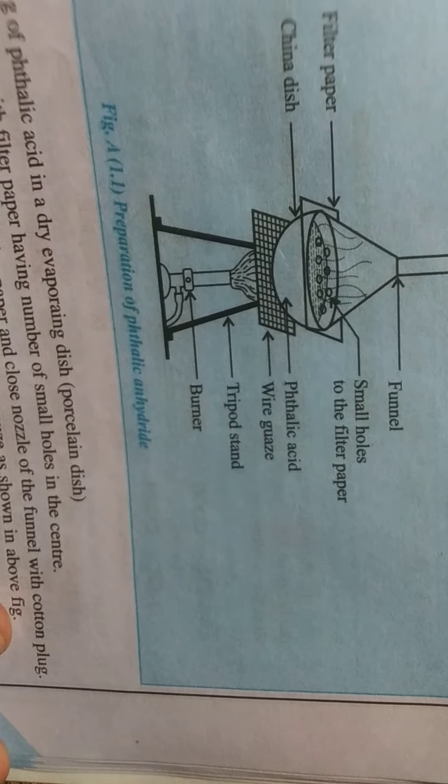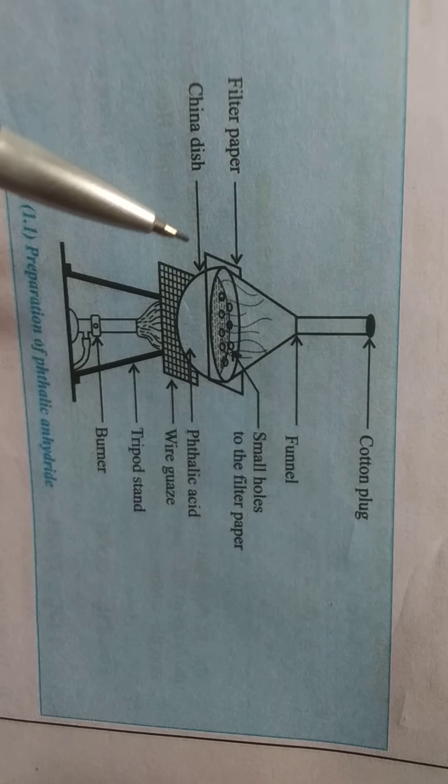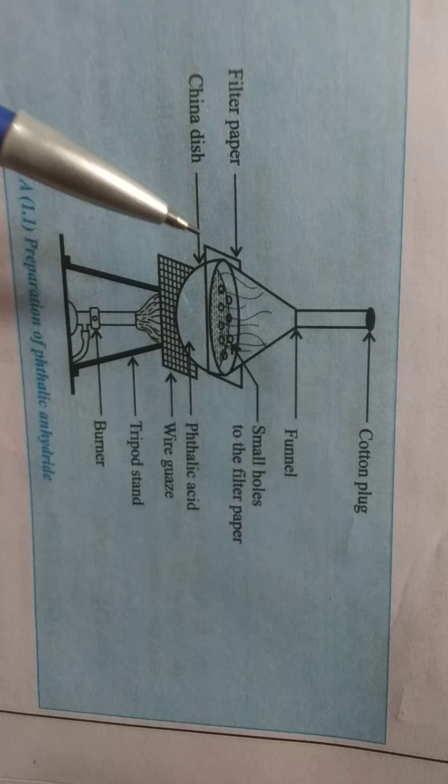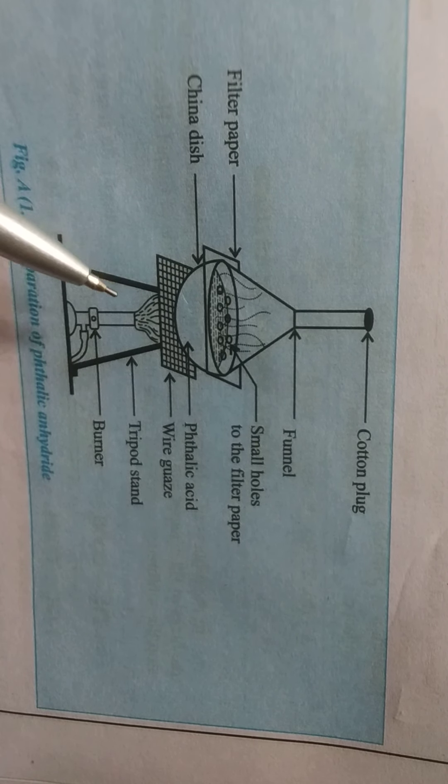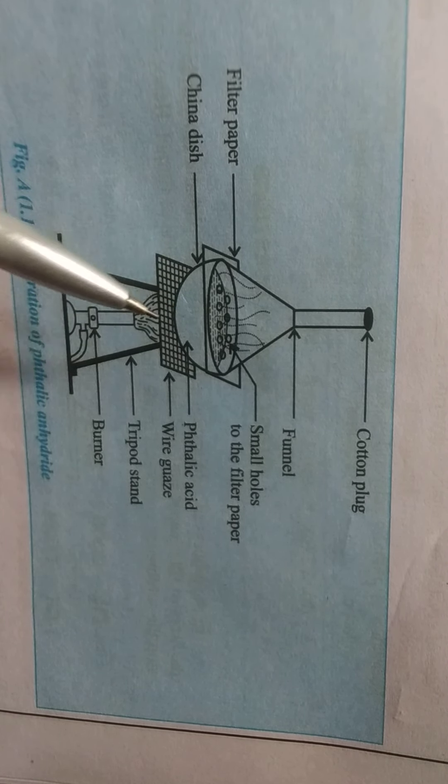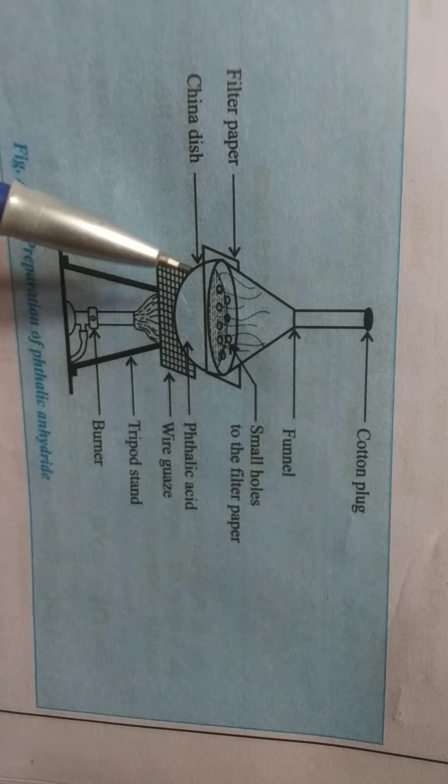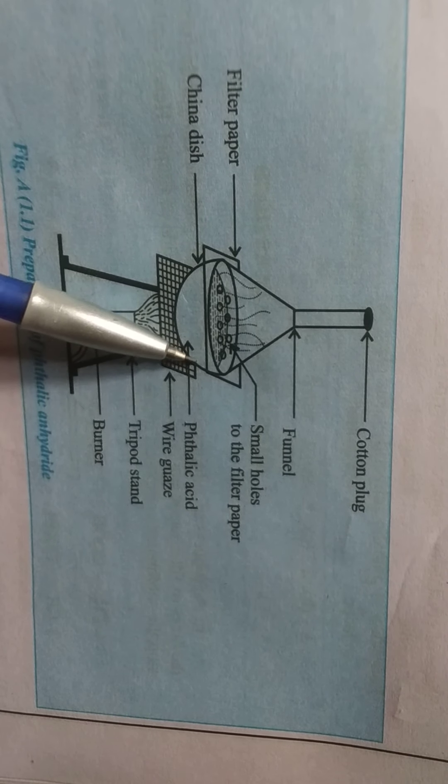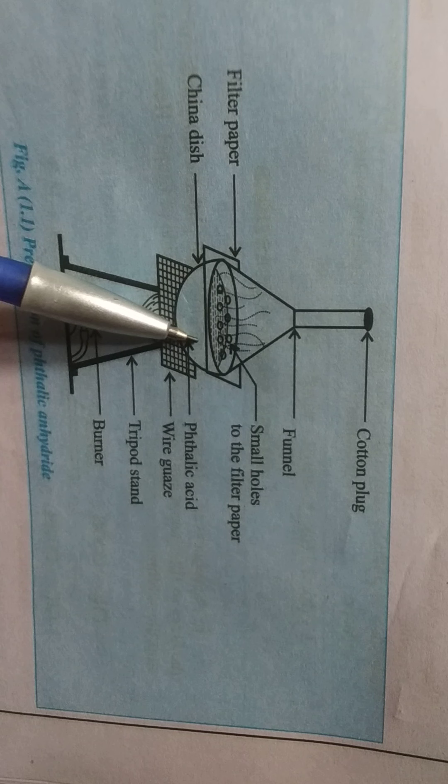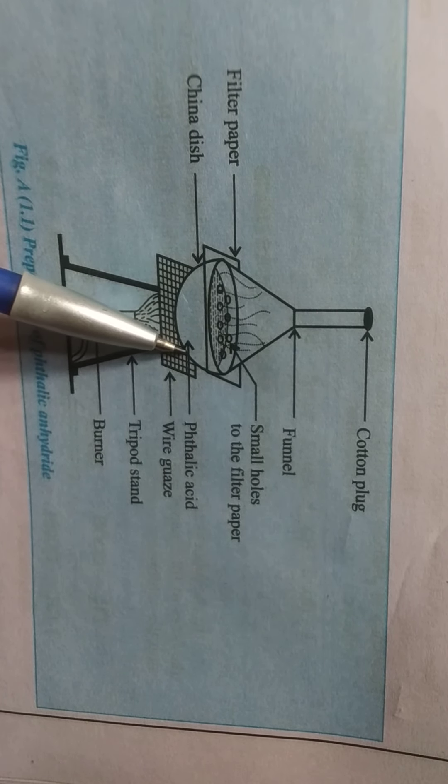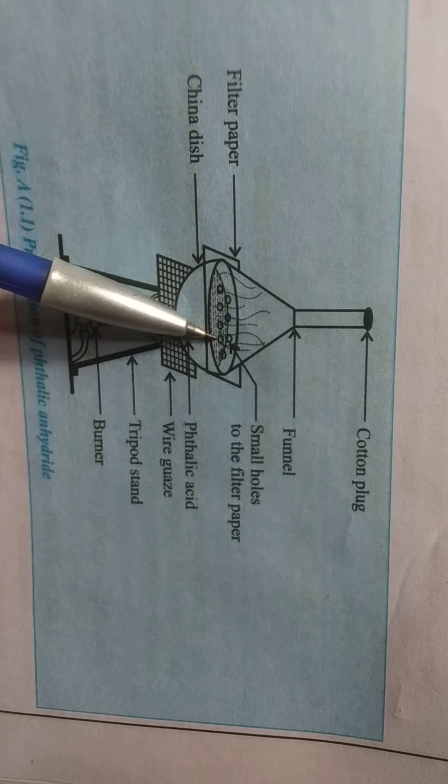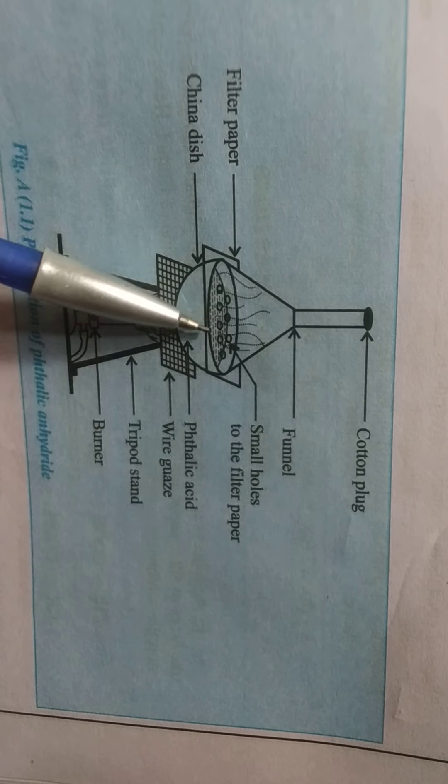Friends, these are the diagrammatical representations of preparation of phthalic anhydride. When we take 2 grams of phthalic acid in dry china dish, cover with filter paper having number of small holes at the center to pass the fumes of phthalic anhydride from this paper.